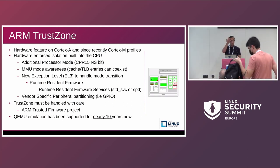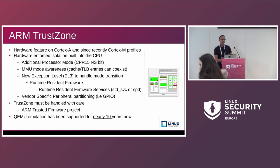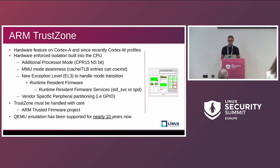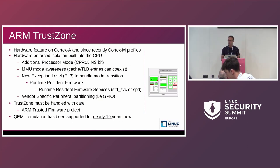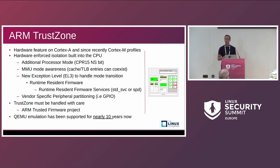The ARM TrustZone is a hardware security feature that has been there for ages, on Cortex-A profiles and more recently on Cortex-M as well. It enforces hardware isolation not only in the CPU but also at the MMU level, so you have separate MMUs. Cache and TLB entries can coexist, so you don't need to flush when you transition from the trusted execution environment into the normal world. Bus transactions, interrupts, and peripherals can be partitioned — usually under the silicon vendor's decision.